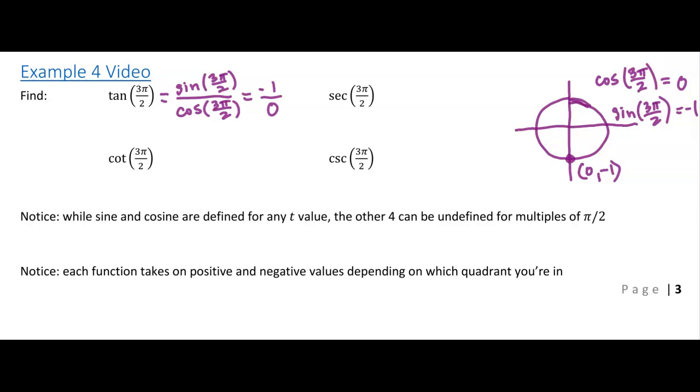So tangent is actually undefined at 3 pi over 2, and you'll find that any time your x coordinate is 0, tangent is going to be undefined. So this is kind of a new thing that we'll have to worry about.